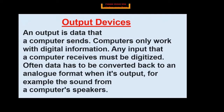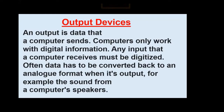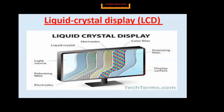Now moving on to output devices. Output devices are those devices which give the result of your instructions. Output is data that a computer sends. A computer only works with digital information. Any input data a computer receives must be digitized; often data has to be converted back to an analog format when it is output. For example, the sound from a computer speaker — whenever you give a voice instruction with a mic, the speakers give you the result of that audio.